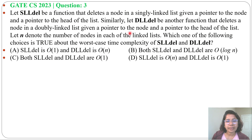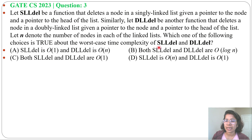Let n denote the number of nodes in each of the linked lists. Which one of the following choices is true about the worst-case time complexity of slldel and dlldel? Four options are given.